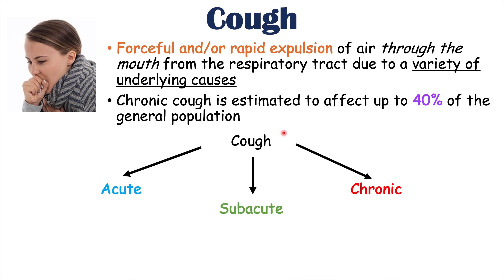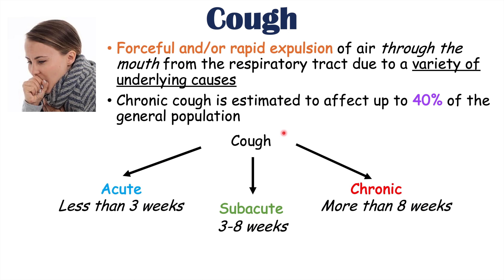More specifically, if a patient has had a cough for less than three weeks, this is considered an acute cough. If they've had a cough for three to eight weeks, this is considered a subacute cough. And if they've had a cough for more than eight weeks, that is a chronic cough. Understanding these definitions helps us better understand the causes. For the acute cough, the most common causes are infectious — respiratory tract infections like viruses.